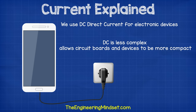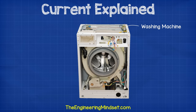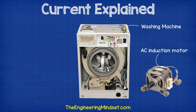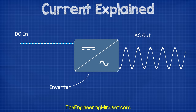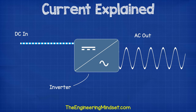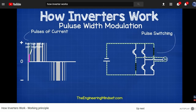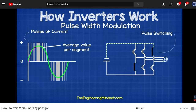Many appliances will use a combination of AC and DC. For example, a washing machine will use AC for the induction motor, which is used to spin the tub with the clothes in. But the circuit board, which controls the settings, the lights, the timers, as well as how fast the motor spins, will use DC power. We can convert AC to DC using an inverter — this is extremely common in electronics. We've covered how inverters work previously, links down below if you want to learn about that also.